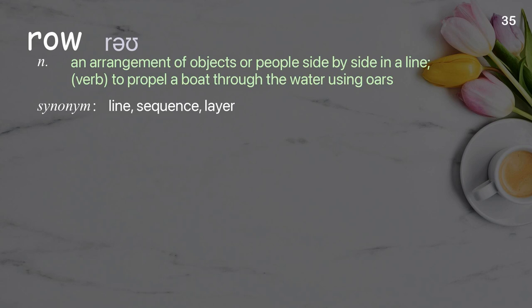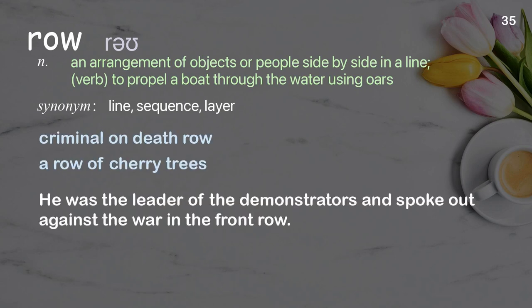Row: an arrangement of objects or people side by side in a line; verb: to propel a boat through the water using oars. Examples: criminal on death row, a row of cherry trees. He was the leader of the demonstrators and spoke out against the war in the front row.